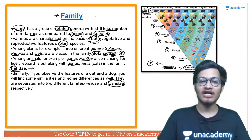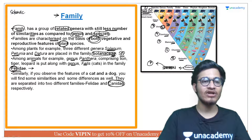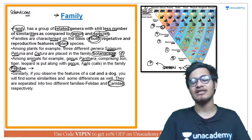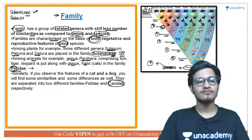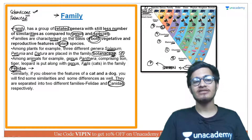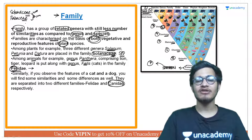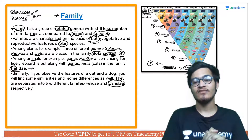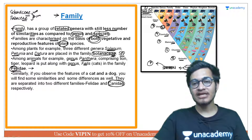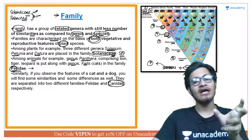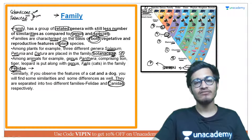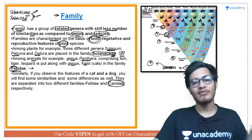If you are asked in an exam — what is Solanaceae? Is it an order, family, genus, or class? The answer is: since it ends in 'ae', it is a family. Similarly, if you see Fabaceae, Anacardiaceae, Brassicaceae, or Liliaceae — all of them are families, because you know the suffix. In the case of animals, Carnivora and Insectivora are orders. These suffixes don't apply everywhere, but in the case of family, the 'ae' suffix is consistently used — you can learn this as a rule.